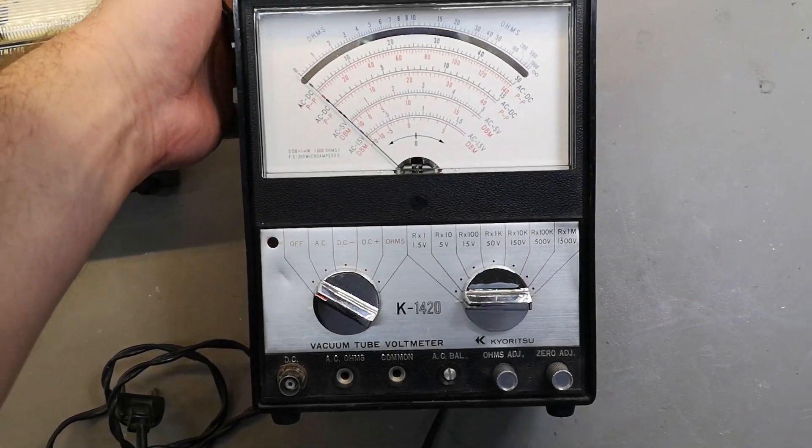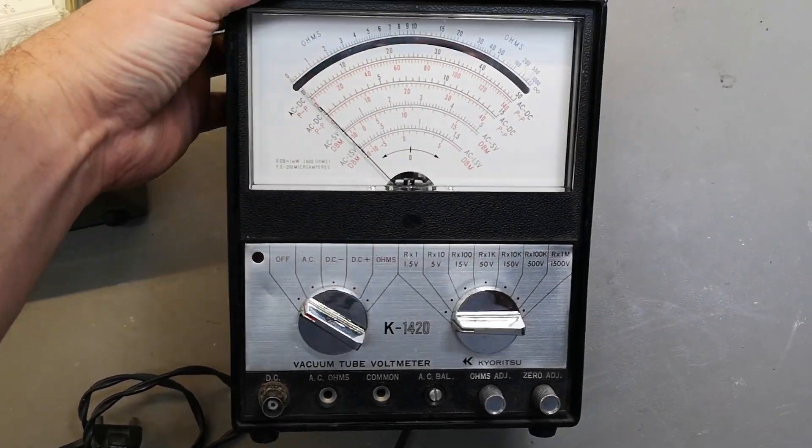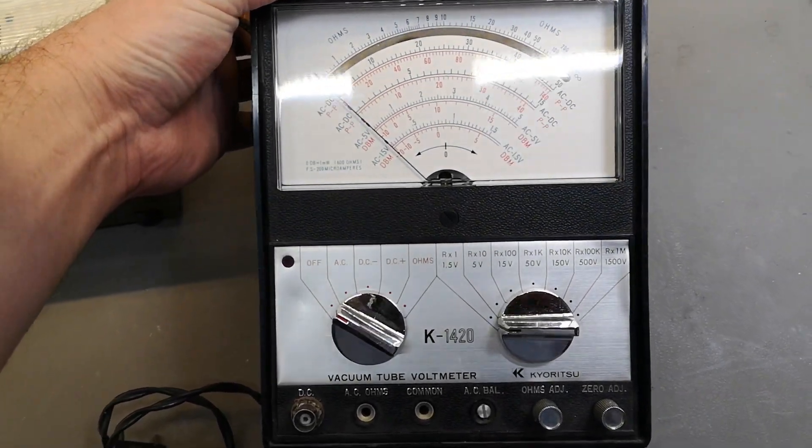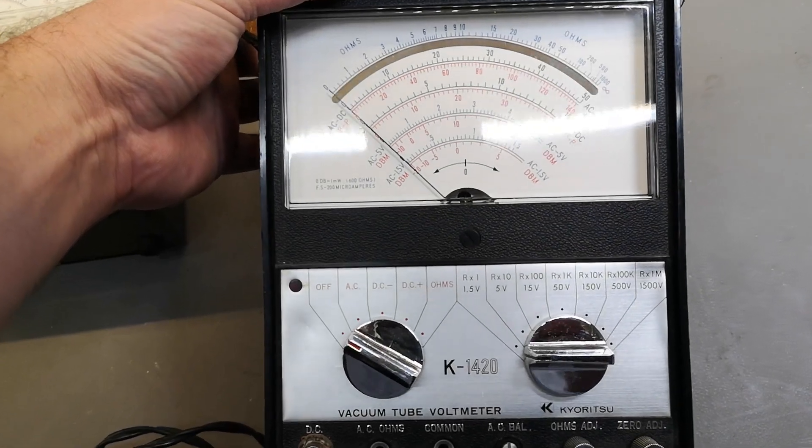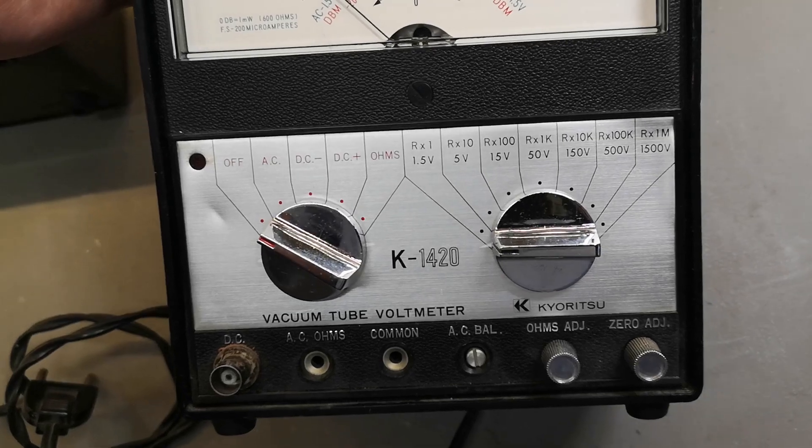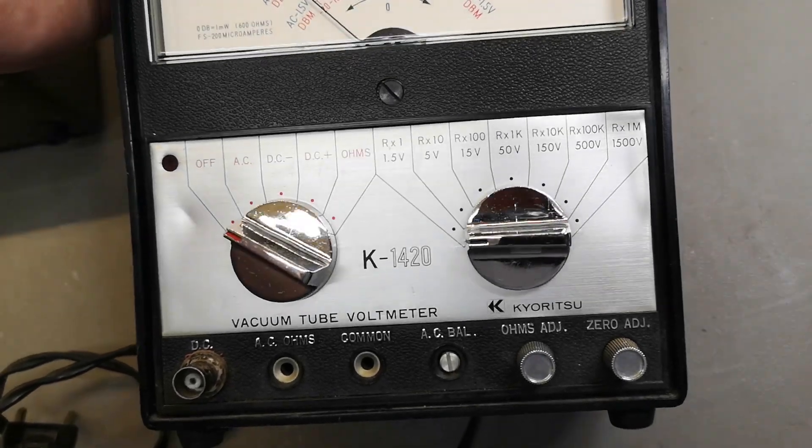Welcome to a new test and teardown video. This time it's another Kirizo voltmeter, but it's a vacuum tube voltmeter. This model is called K1420.